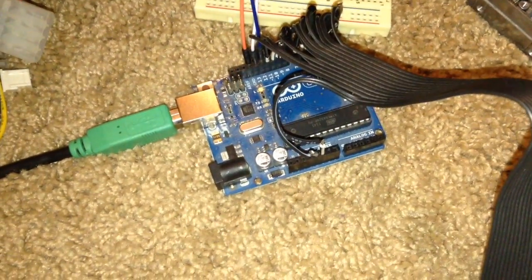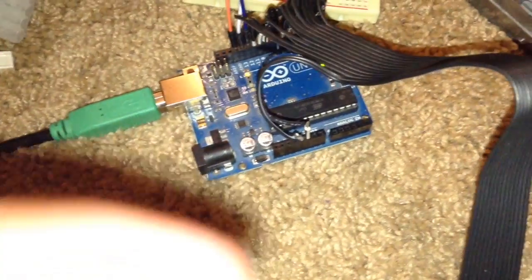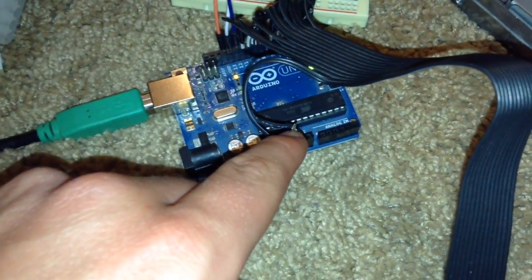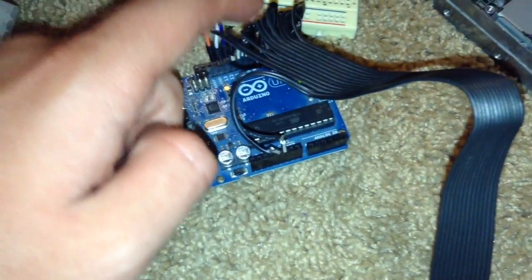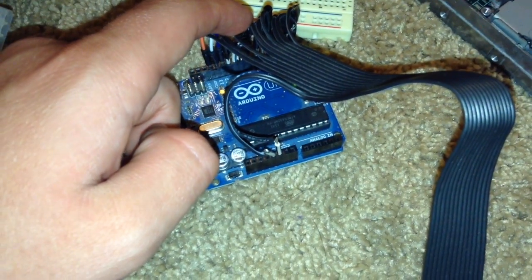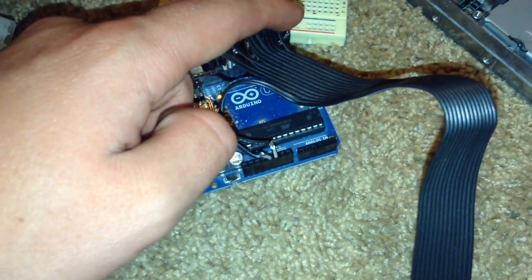The whole piano is connected through a ribbon cable to the Arduino. Here is the ground and positive, and here are the ribbon cables going from the 10 keys to 10 pins.